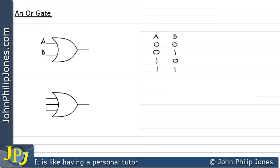Let's consider another OR gate. This OR gate has three inputs, and the inputs can be A, B, and C. Over here I'm going to write down the inputs A, B, and C, and look at the various combinations we can have with the three-input OR gate. They all can be 0.